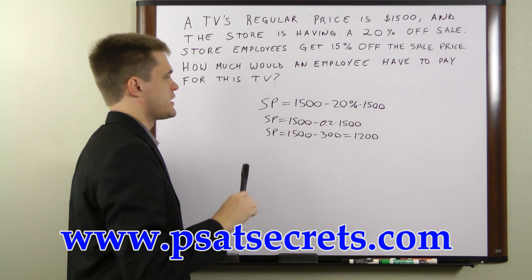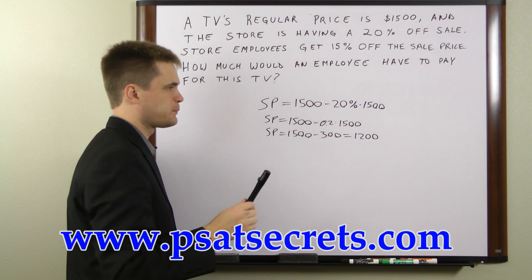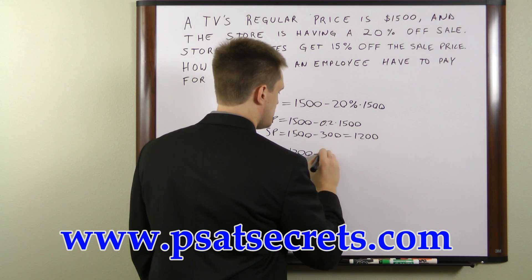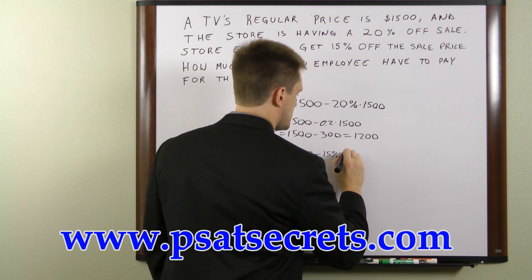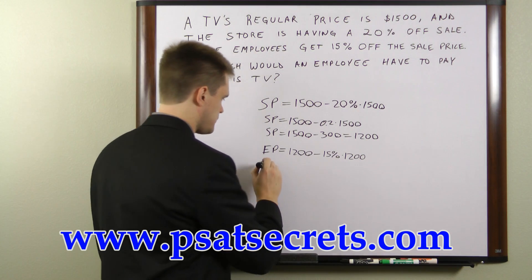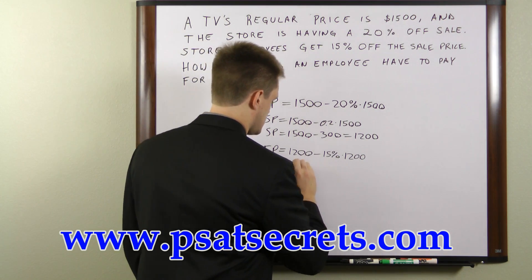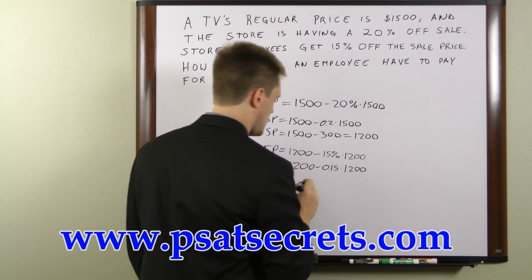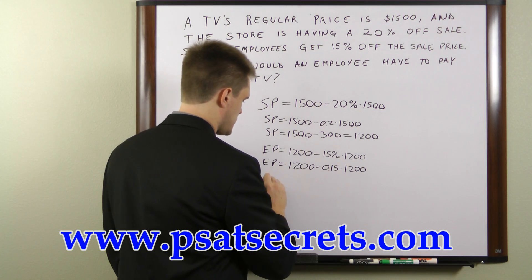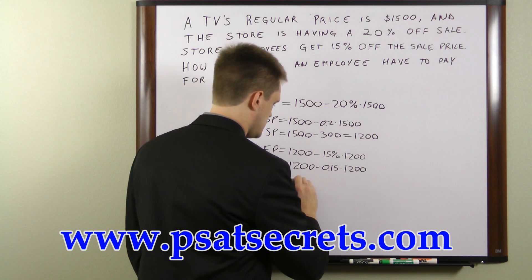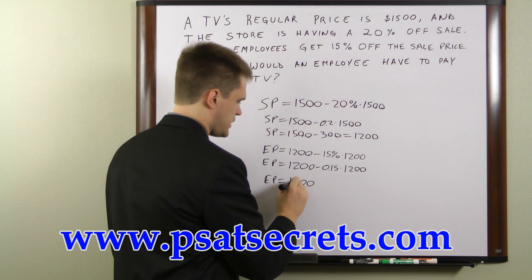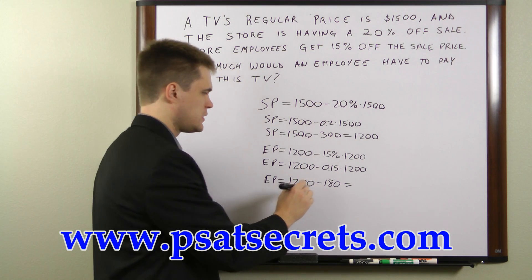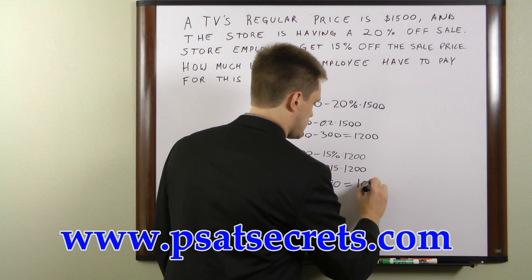Now to get the employee's price, we have to take 15% off of the sale price. So the employee price equals $1,200 minus 0.15 times $1,200. That product is equal to $180, so the employee price is $1,200 minus $180, which means the employee price is $1,020.